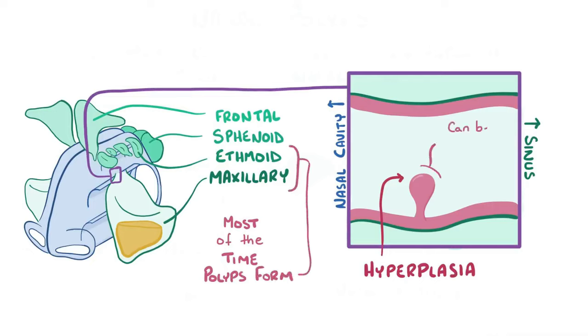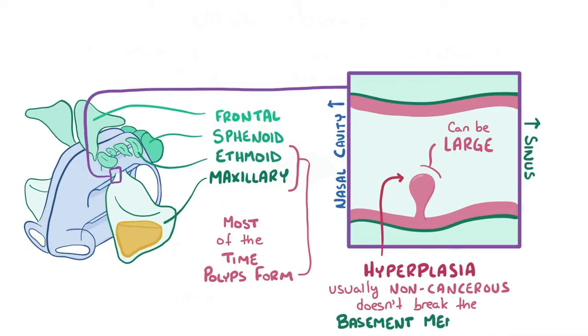Nasal polyps can get large — the size of a pea — but they're usually non-cancerous, meaning they don't break through the basement membrane of the epithelium.